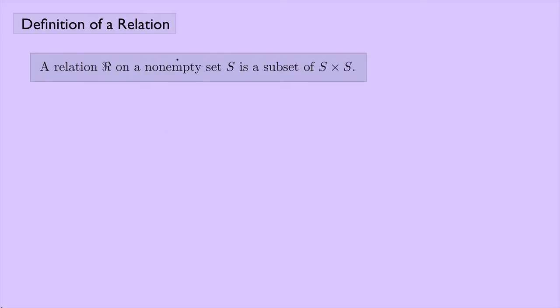Notice that you can also define a relation, if you wanted to, from a set A to a set B. Then you could say the relation is a subset of the Cartesian product of A and B. But for everything I'm going to do, just one set S should suffice.